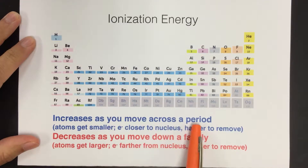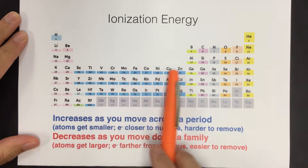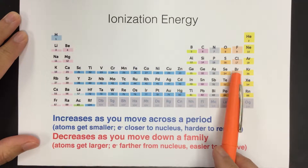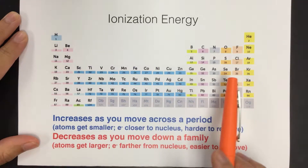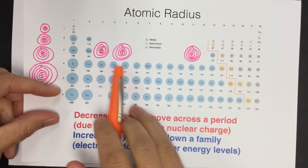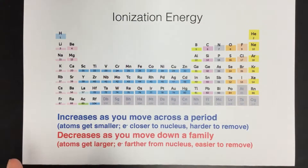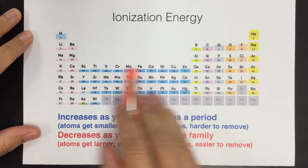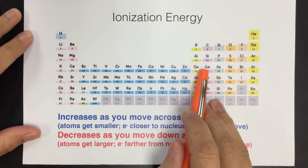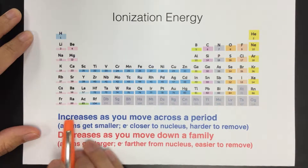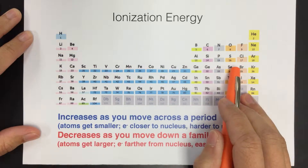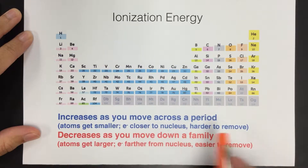Ionization energy will increase as you move across a period — you can see the lines get higher as we go across. This is related to atomic radius: the size of the atoms gets smaller as we go across. If you think about the football player, they want to hold the football close to their body and become smaller, making it harder for you to take the electron away. So as atoms get smaller going across, the energy required to remove the electron goes up because the electron is closer to the nucleus.